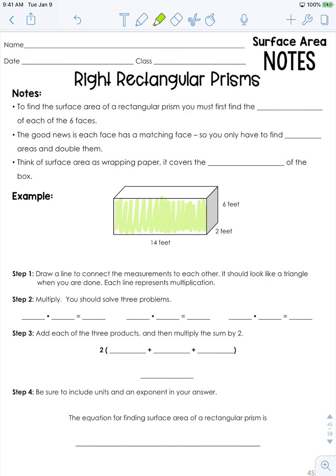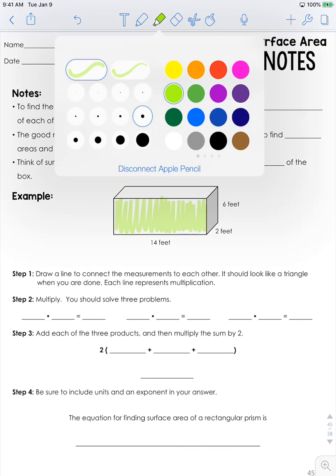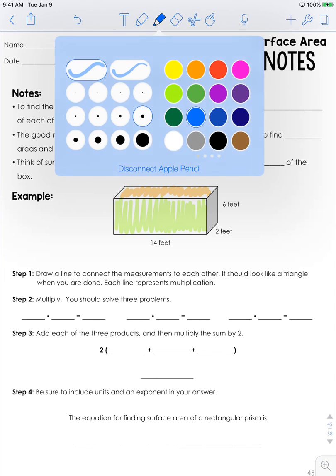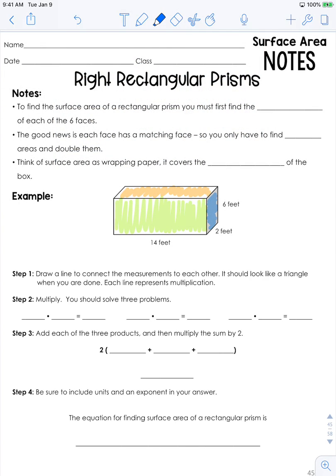If you look at the rectangular prism on your screen, you can see three sides. However, just because you can only see three doesn't mean there are only three. Each side that's colored actually has a twin. So in order to find the surface area of this entire rectangular prism, you must first find the area of each of the six faces. The good news is that each face has a matching face, or twin, so you only have to find three areas and then double them.